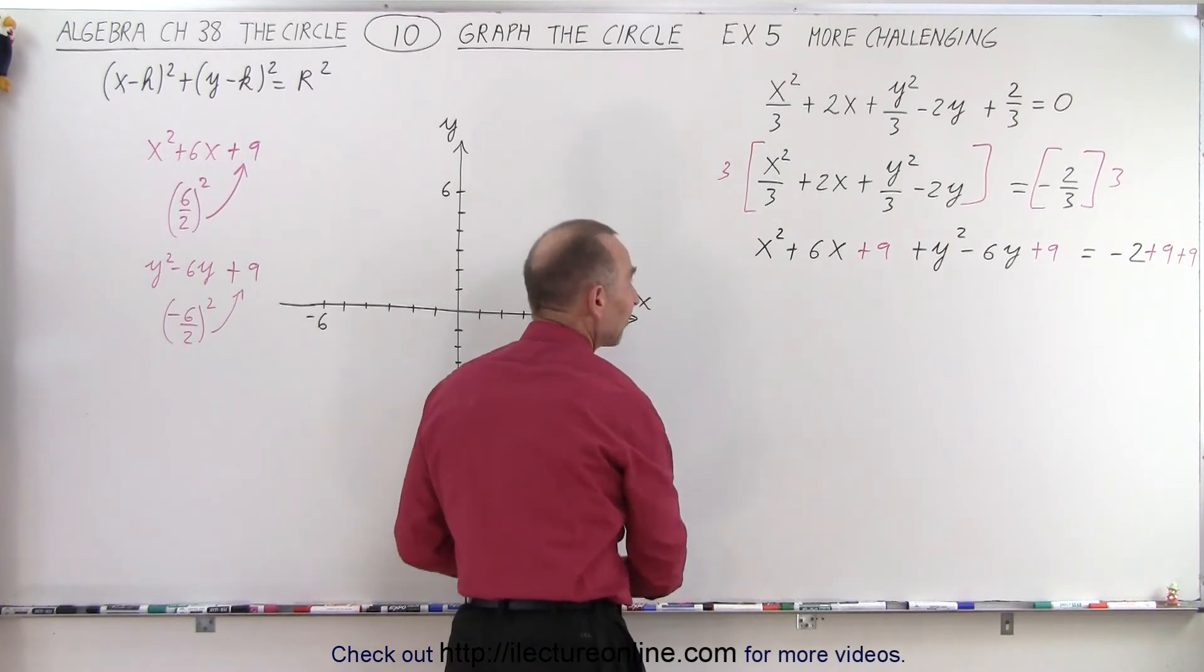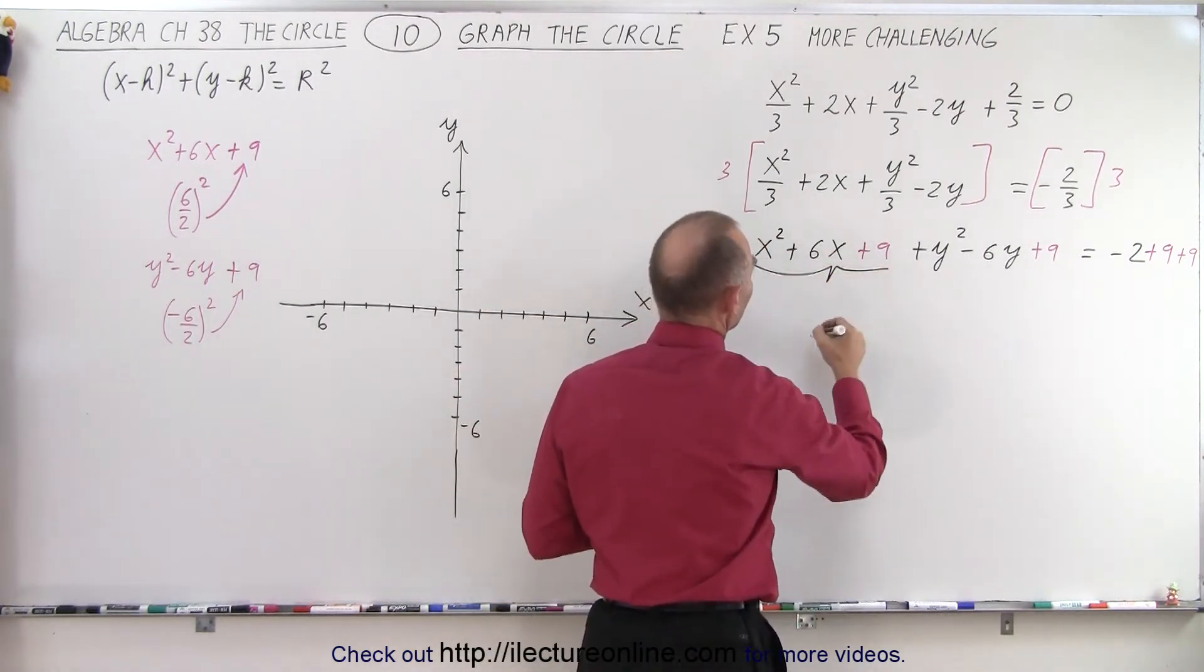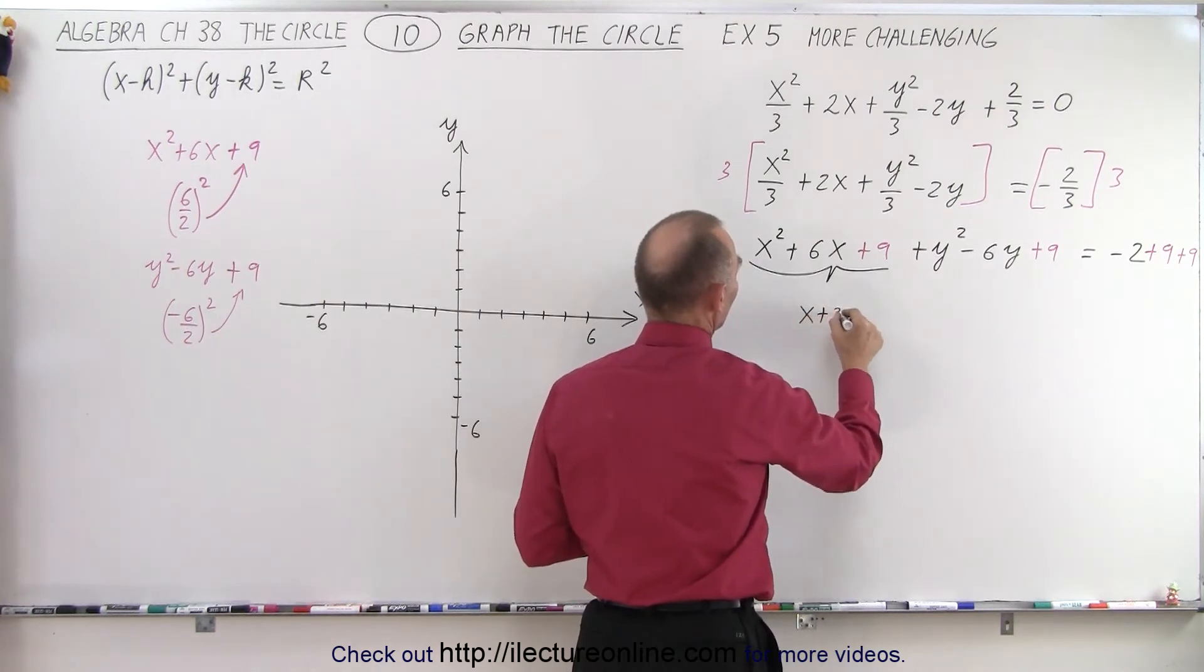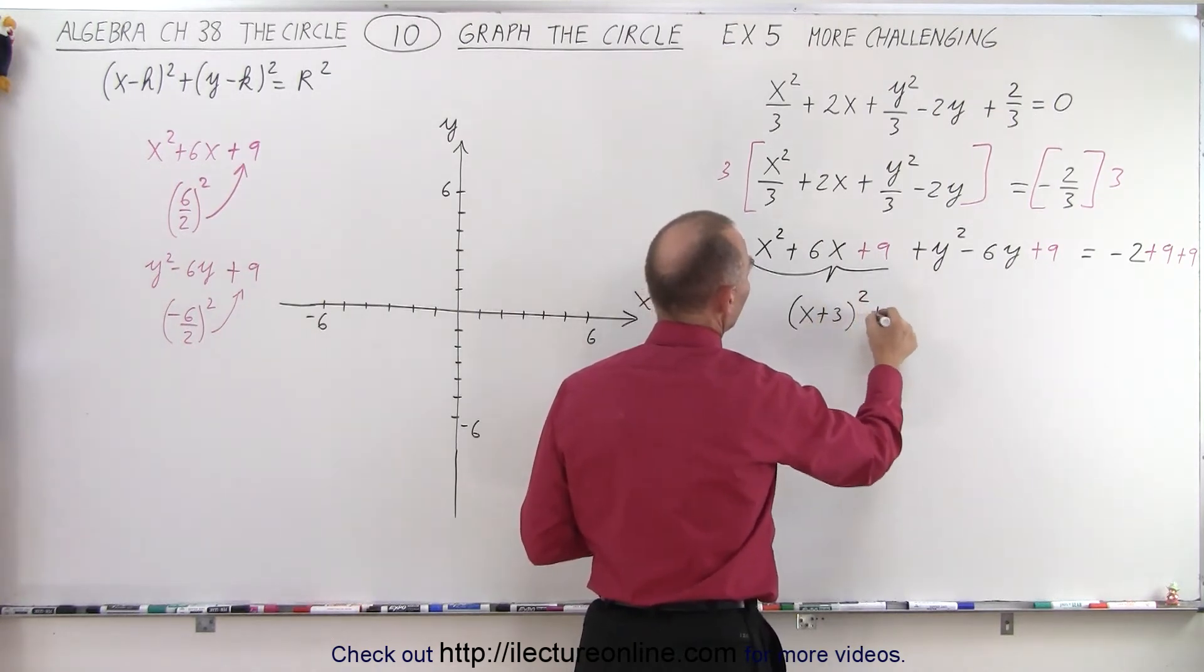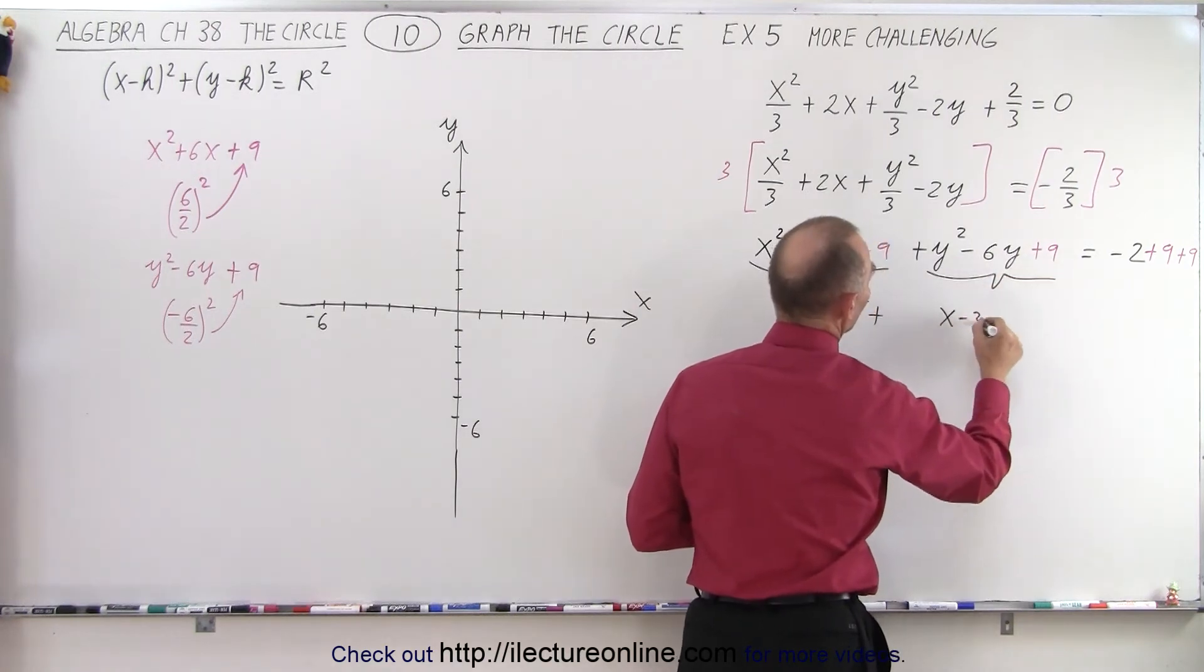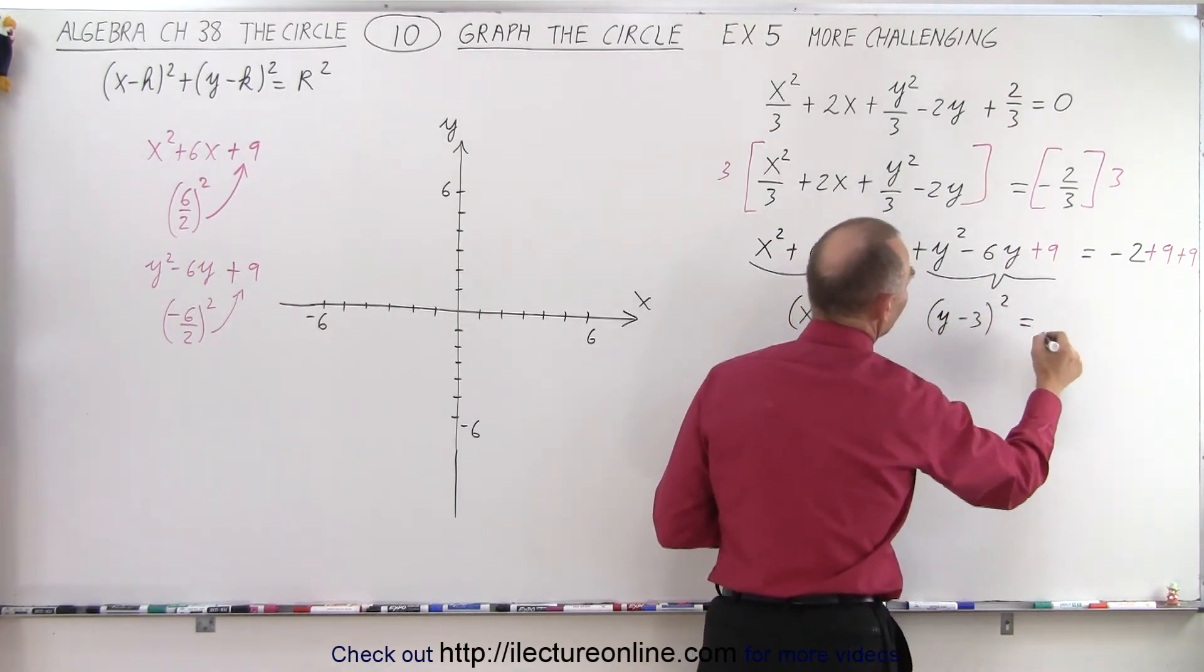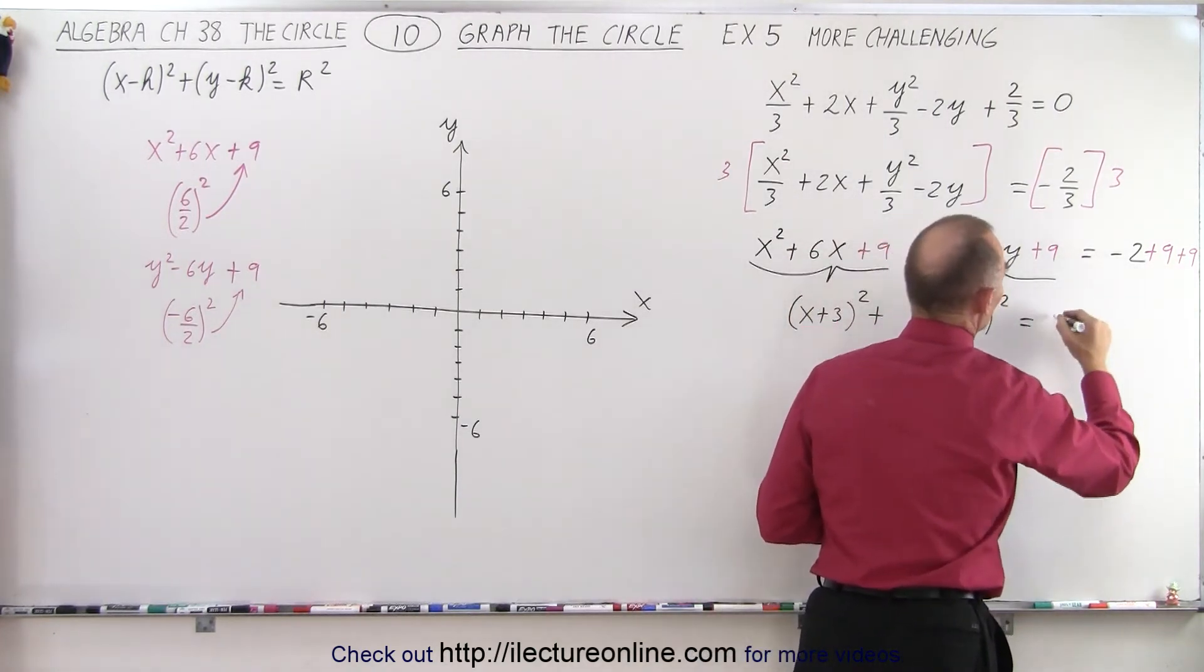Okay, let's see what we have here. Here, these three terms combined can be written as x plus 3 quantity squared plus those three terms combined can be written as x minus 3 quantity... Oh, not x, that's a y, of course. So y minus 3 quantity squared is equal to 18 minus 2, or 16.